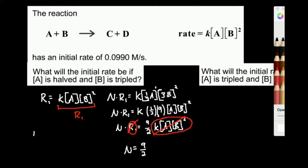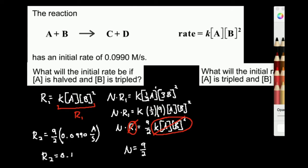So the new rate, r2, is going to be 9/2 times r1, which we said was 0.0990 molar per second. Calculating: 9 divided by 2 times 0.0990 gives us the new rate of 0.4455 molar per second. And that's the answer.